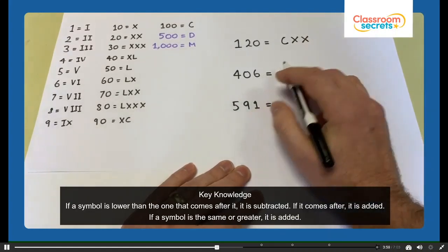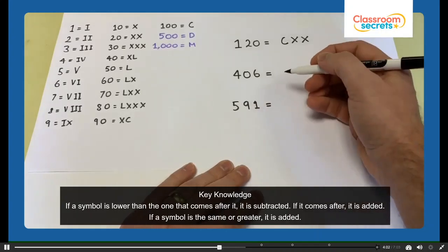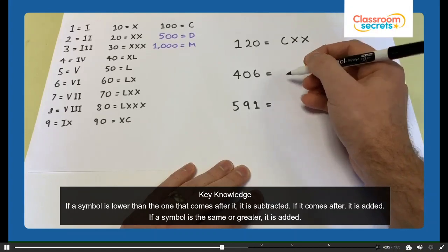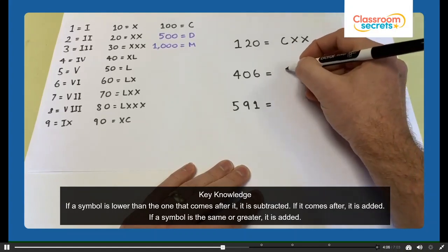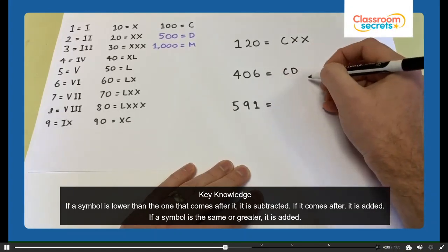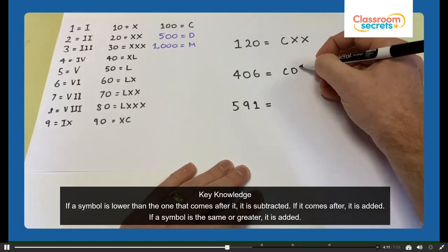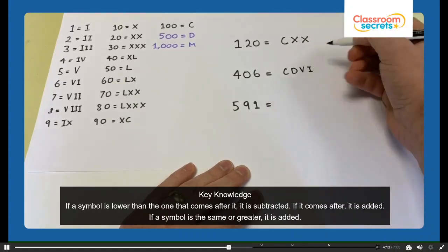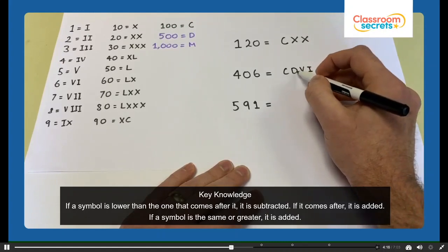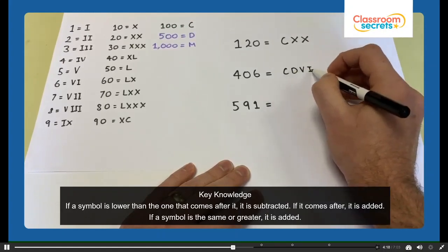406 — we'd need 400 first of all. And 400 in Roman numerals is 100 less than 500, so it would be CD for 400. And 6 is VI. So 406 would be CDVI — 100 less than 500, so 400, and then 6.